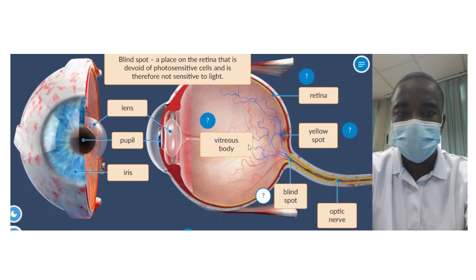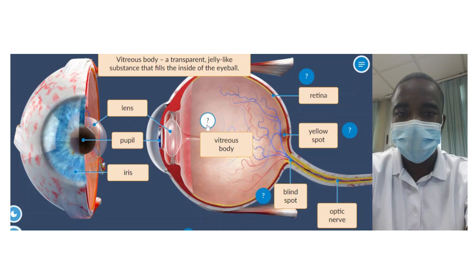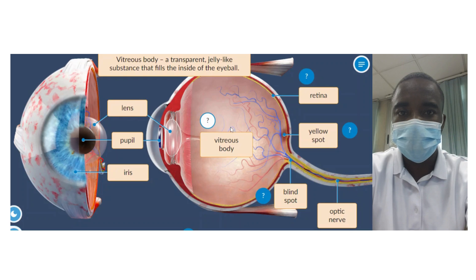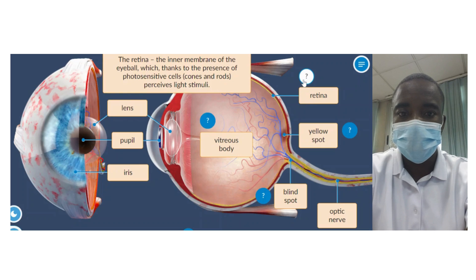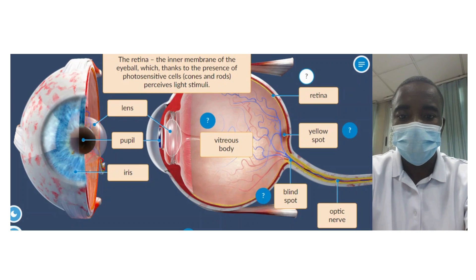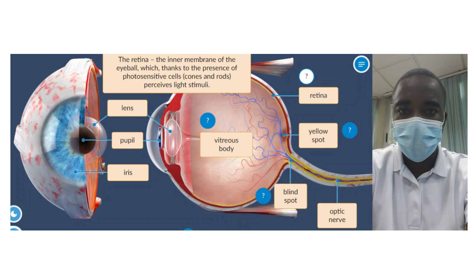The vitreous body is a transparent, jelly-like substance that fills the inside of the eyeball. The Human Eye Structure Simulation helps students understand the role of the vitreous body in maintaining the shape of the eye and providing a clear pathway for light to reach the retina. By exploring the properties of the vitreous body, students can see how it contributes to the overall functioning of the eye.